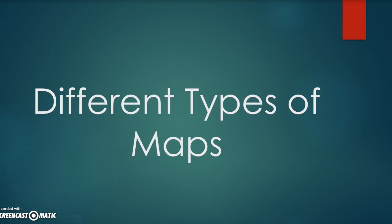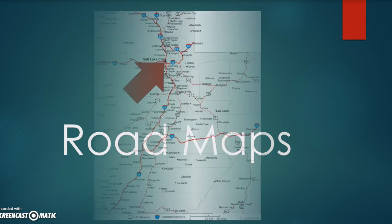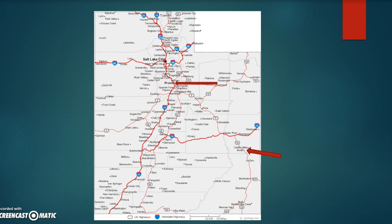So let's look at different types of maps. We have road maps. Here's an example of a road map in Utah, pointed to Salt Lake, the capital, marked by the star. Right here we have I-15 marked in red, with the blue and red symbol showing it's the freeway. Here are some important cities: Provo and Moab. So the map will show you cities and roads.